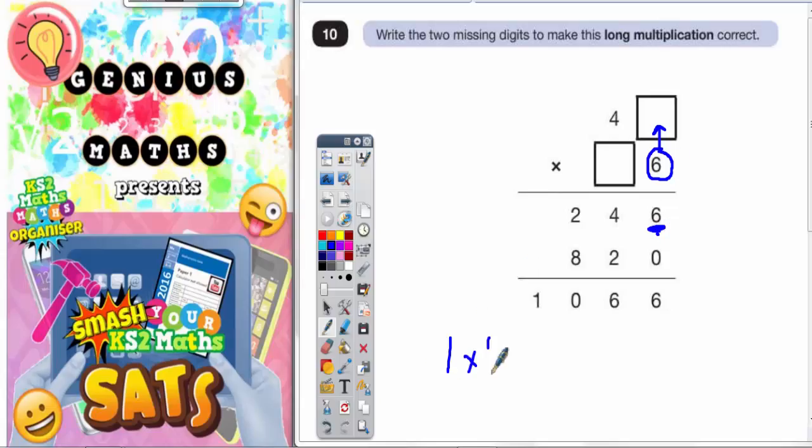Well you could do 1 times 6, which would end in a 6, and you could also do 6 times 6, which would end in a 6 because that would be 36 and that would still give you a 6 there. So let's see if either of those two work.